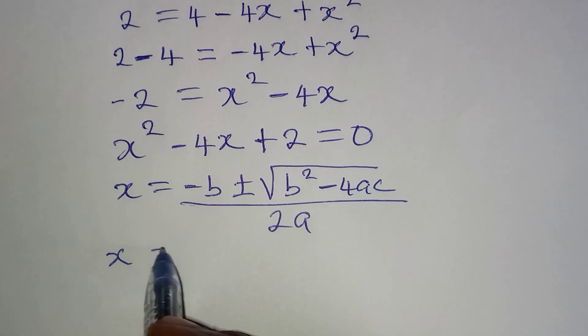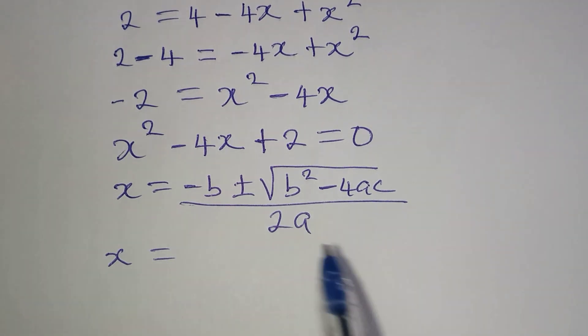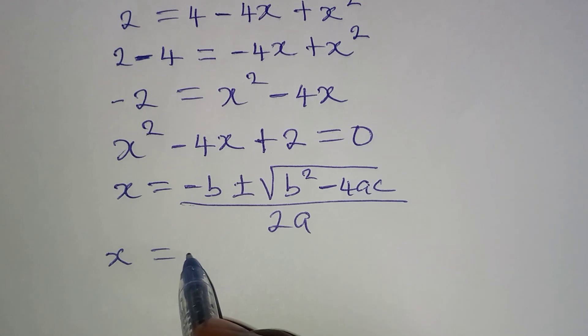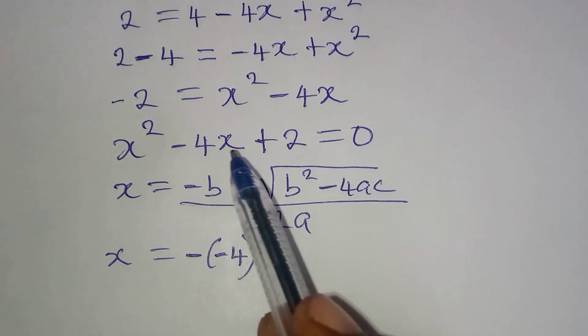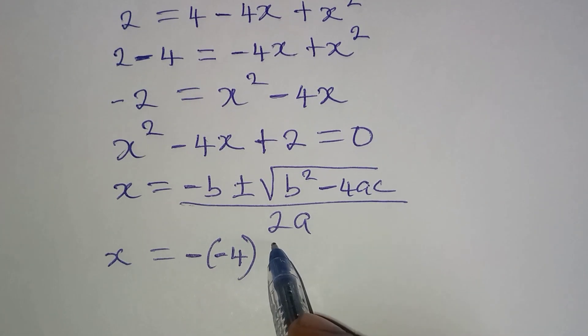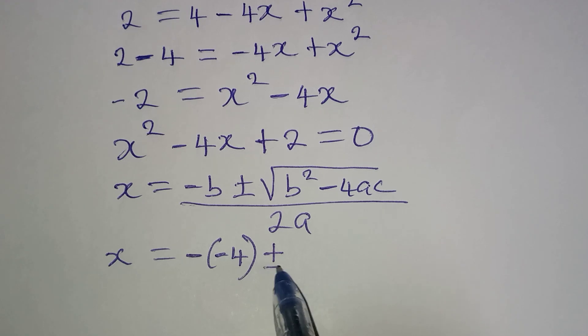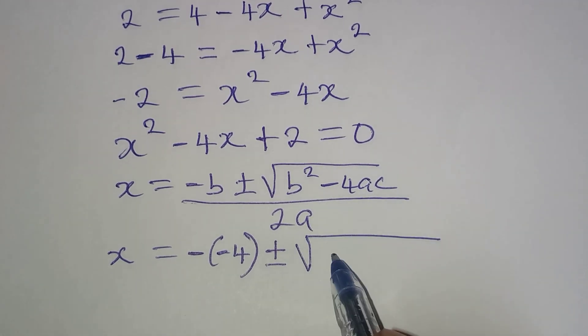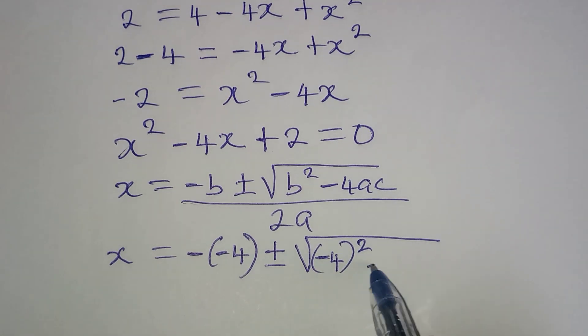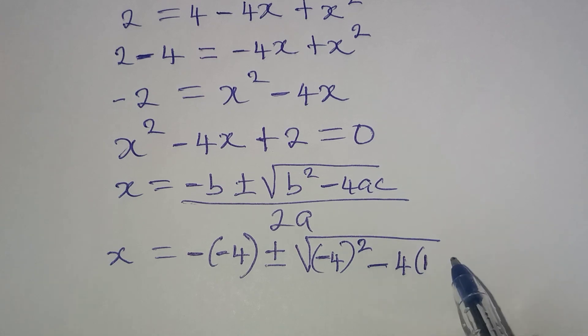Now our x will be equal to... So the b here is the coefficient of x, and that is minus 4. So I'll write minus minus 4, because it's already minus 4 and b is having negative. Then plus or minus, here now I have square root of minus 4. Put this in bracket and square it.